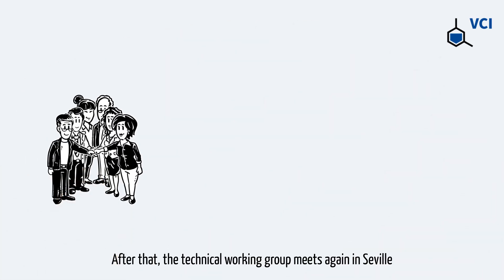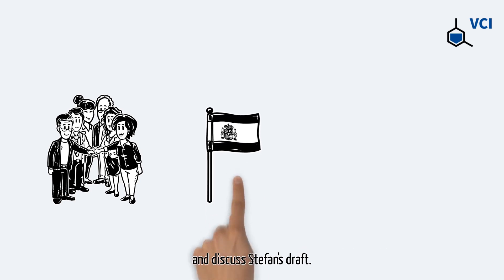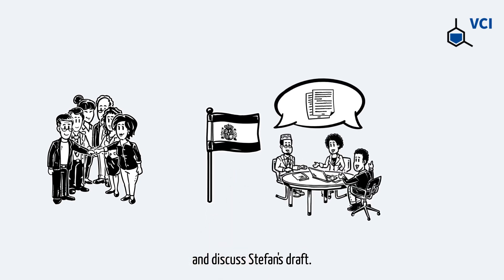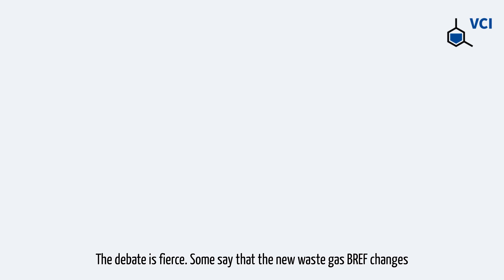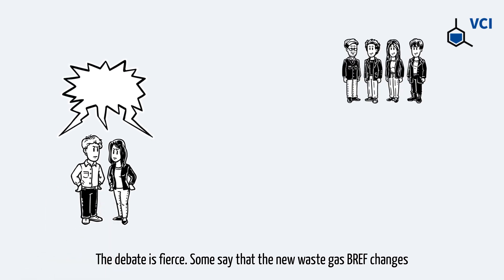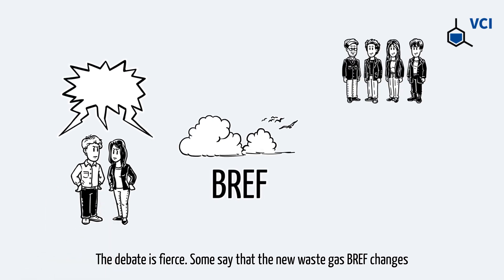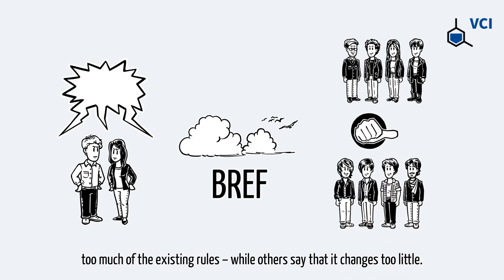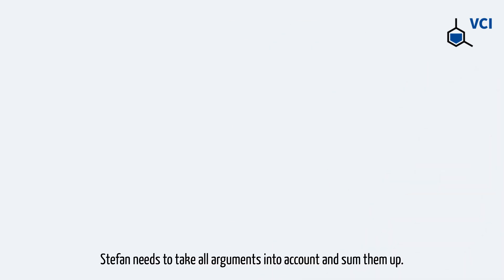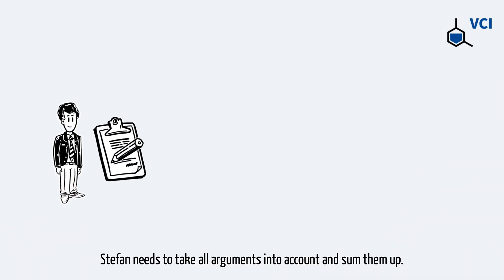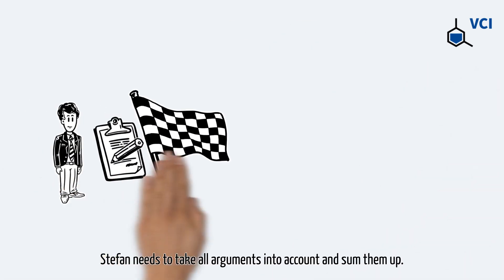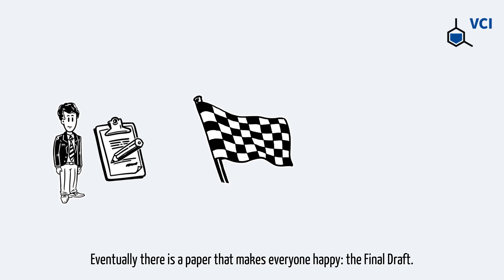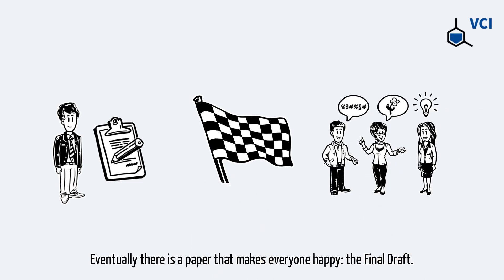After that, the technical working group meets again in Seville and discusses Stefan's draft. The debate is fierce. Some say that the new waste gas BRAF changes too much of the existing rules, while others say it changes too little. Stefan needs to take all arguments into account and sum them up. Eventually there's a paper that makes everyone happy: the final draft.